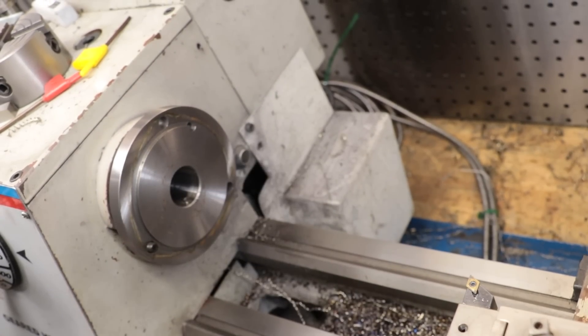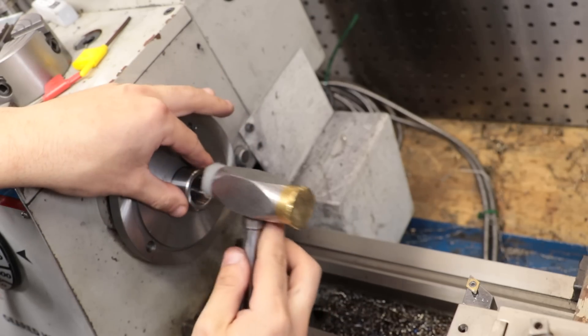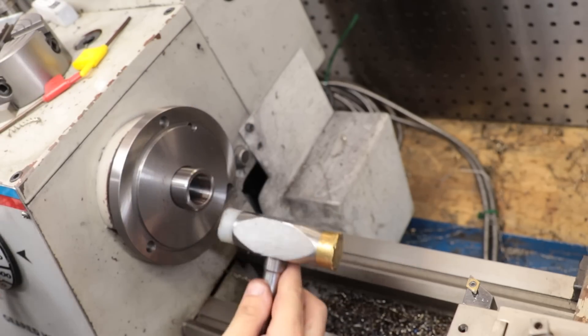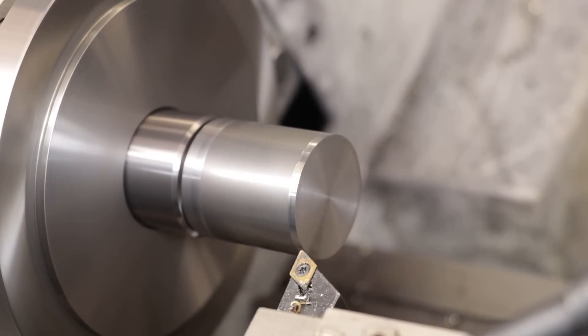I now get the chuck off so I can hold the part directly in the spindle nose. I can now turn down the outside.